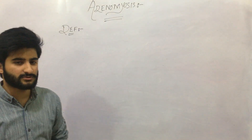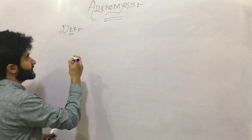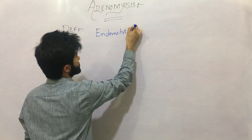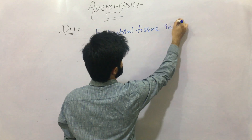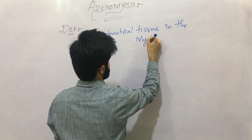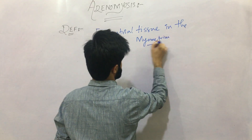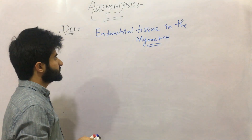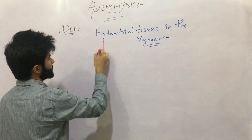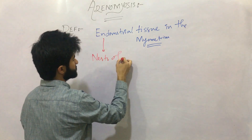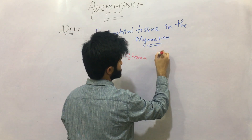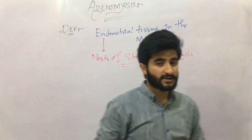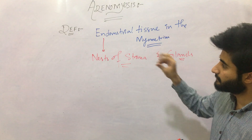What is Adenomyosis? Adenomyosis is defined as endometrial tissue in the myometrium. If endometrial tissue is present in the myometrium, we call it Adenomyosis. This endometrial tissue comprises nests of stroma and glands — both stroma and glands are present in the myometrium.